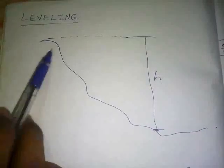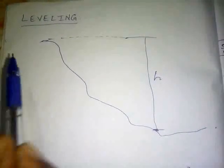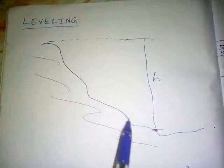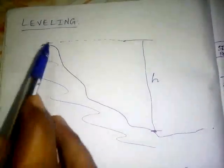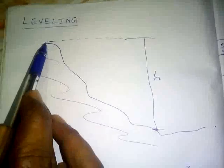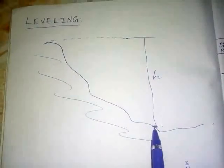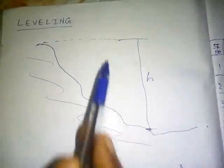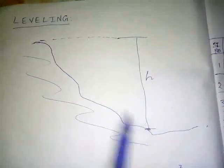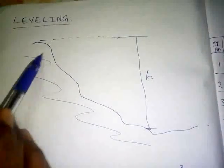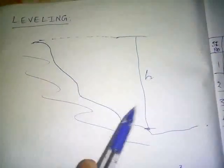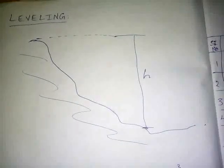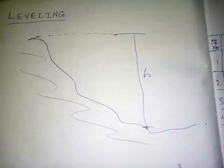Leveling involves working with surfaces. Here is a surface — this is a surface. Now, we know the height of a point; this is about 5-6 meters. This length is very wide, over 100 meters. There is a surface in the area of the Dumpy Level and Total Station.